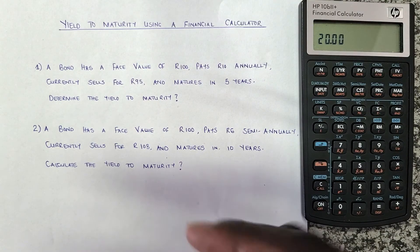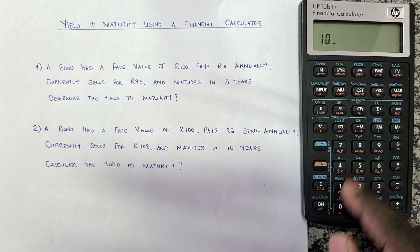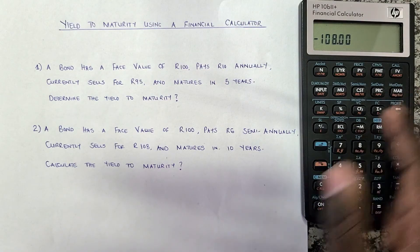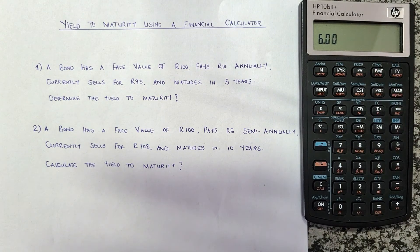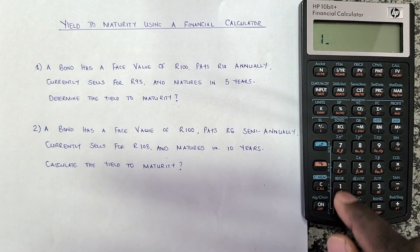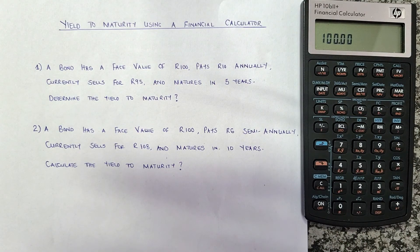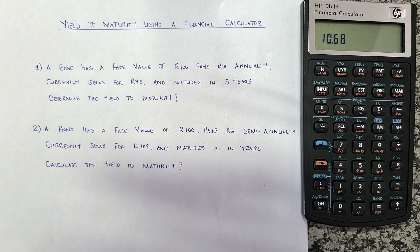Now we enter the present value: the bond currently sells for 108 rand, so press 108, make it negative, and press PV. Next, enter the payment of 6 rand, leave it positive, and press PMT — we already put PV as negative, so PMT stays positive. The future value is the face value of 100 rand; press 100 and press FV, leaving it positive. Now press I/YR to compute the yield to maturity.